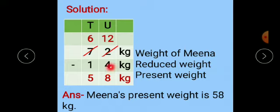Now see here we cannot subtract 4 from 2. Means we have to borrow from the tens place. So cut 7, write 6. Cut 2, write 12. 12 minus 4 is equal to 8 and 6 minus 1 is equal to 5. Answer is 58 kg - the present weight. And in word problem we write the final answer. So here final answer is: Meena's present weight is 58 kg.